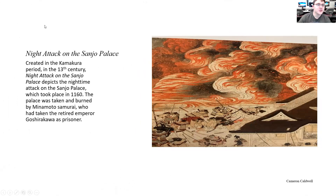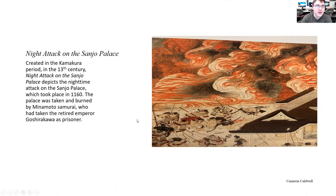Night Attack on the Sanjo Palace was created in the Kamakura period in the 13th century. It depicts the nighttime attack on the Sanjo Palace, which took place in 1160. The palace was taken and burned by a Minamoto samurai who had taken the retired Emperor Goshirakawa as prisoner.